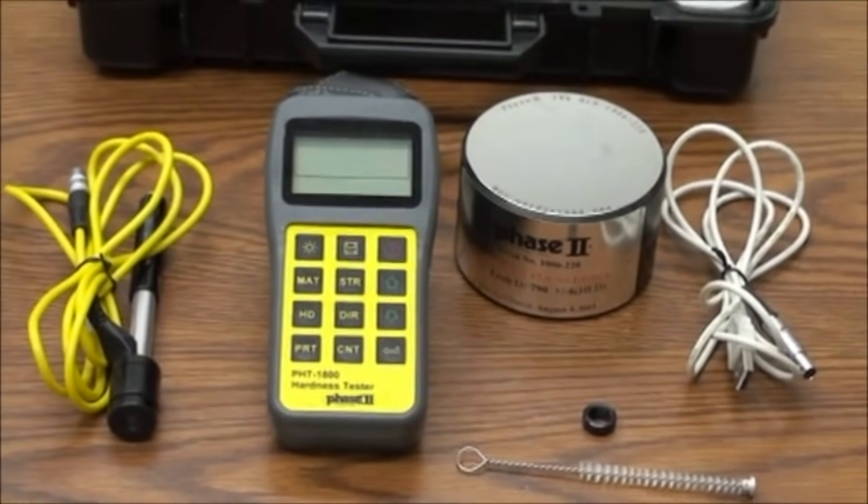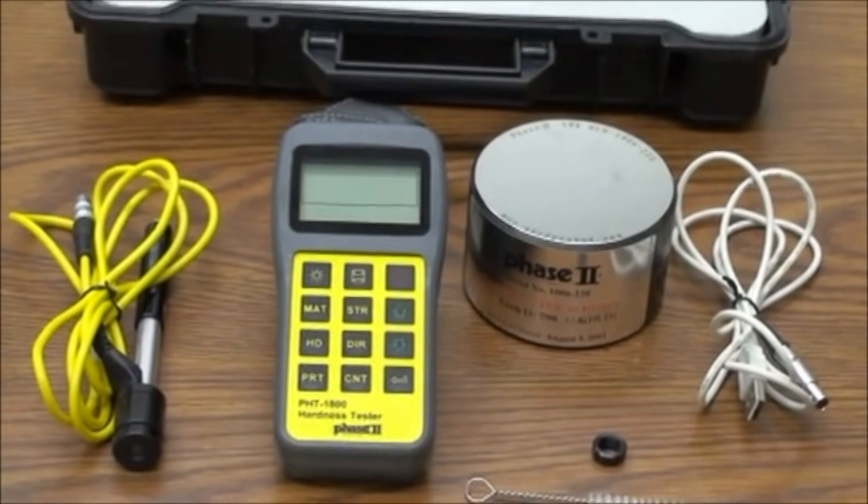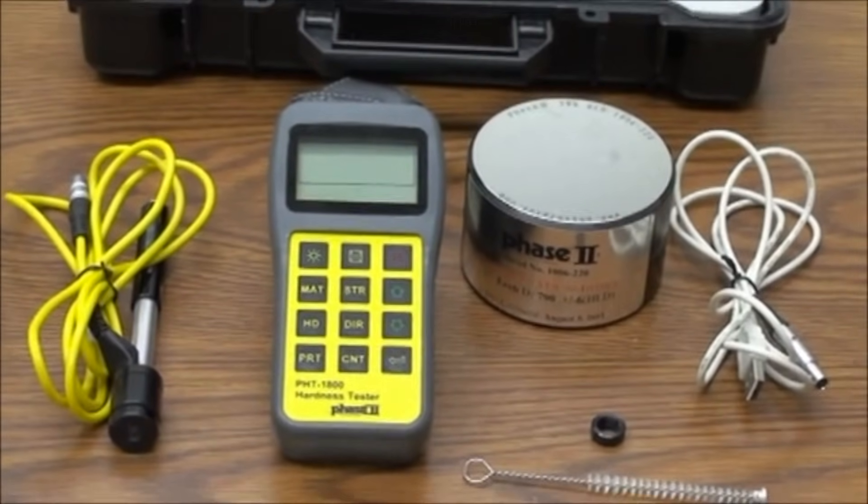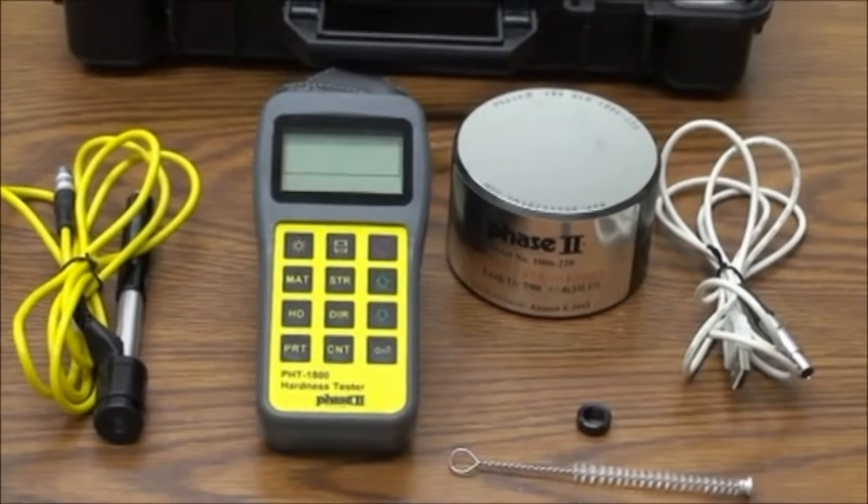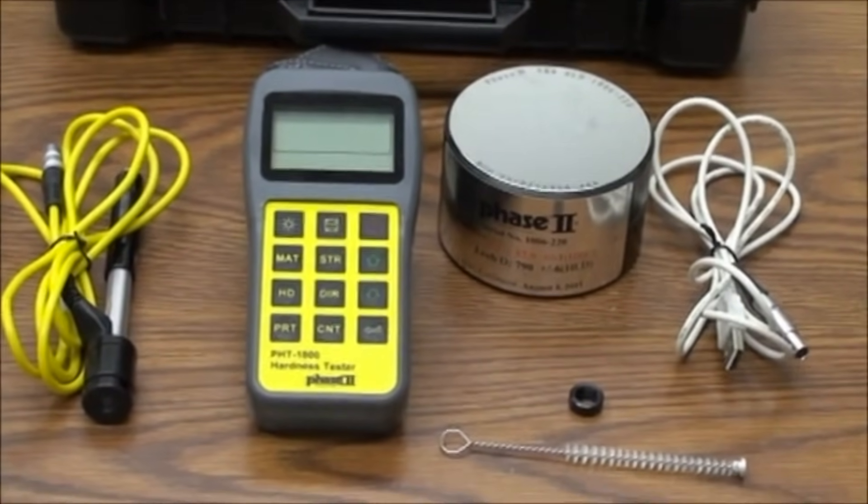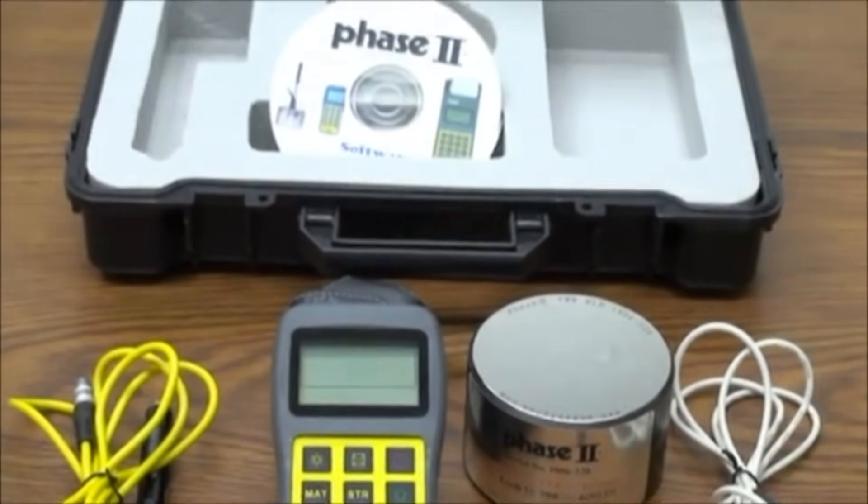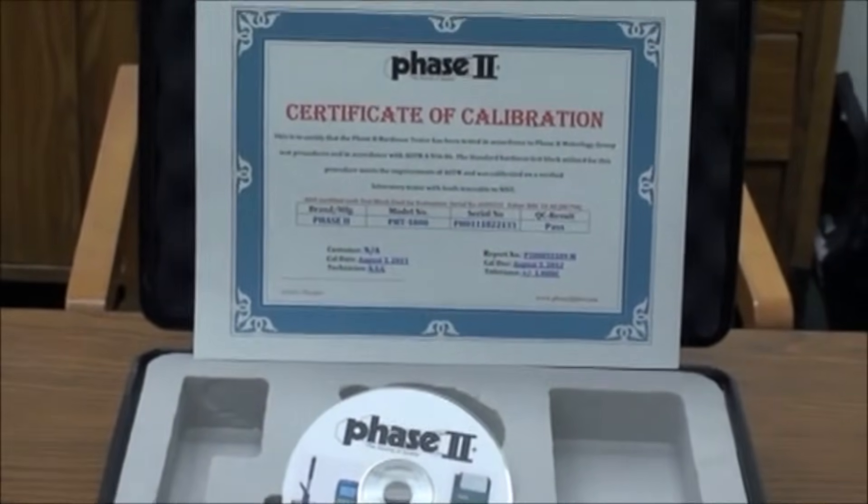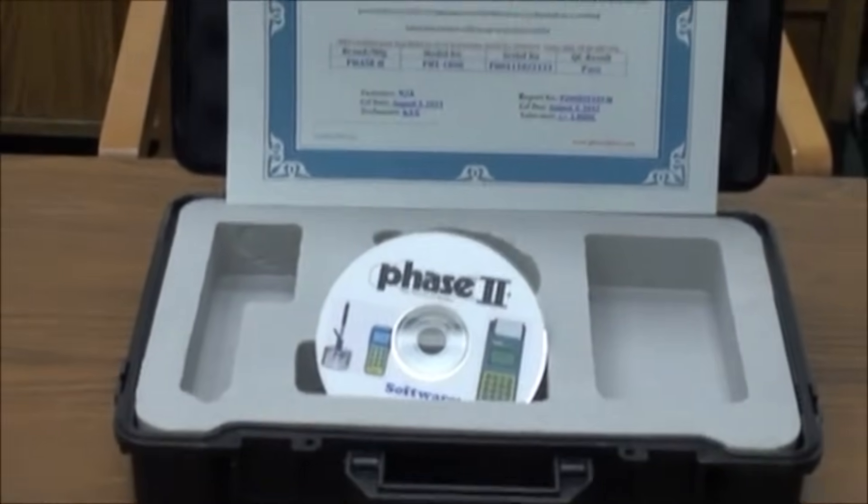Phase 2 tester PHG 1800 comes standard with the module, the impact device, a test block, a tip, a wire cleaning brush for the impact device, software, a calibration certificate, and a manual in a plastic molded case.